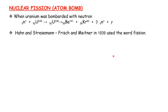Nuclear Fission: when Uranium-235 is bombarded with a neutron, it forms Uranium-236. One neutron is used, and the result is Uranium-236.